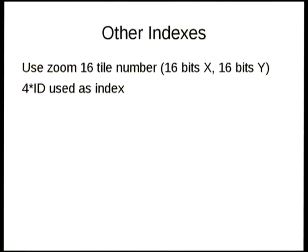For all the other indexes, I'm storing the zoom-16 tile number. I can use the zoom-16 tile number to figure out the zoom for that particular tile, and I use the ID as the index into the file, multiplied by 4 because it takes 4 bytes to store the 16-bit X and 16-bit Y of each tile.